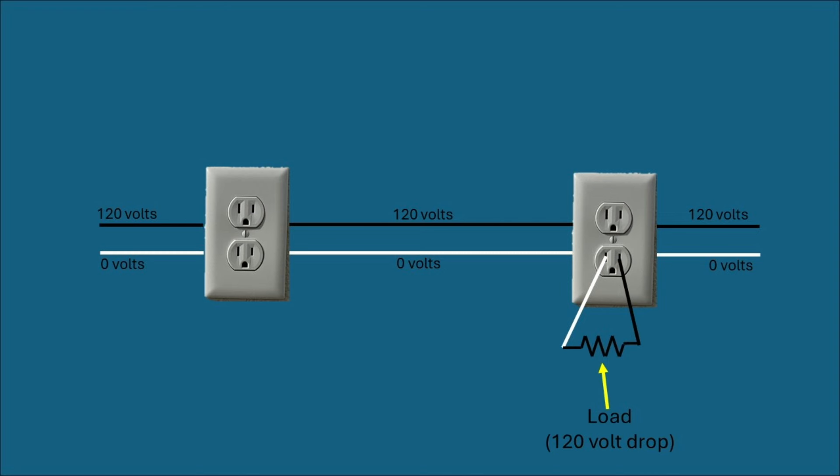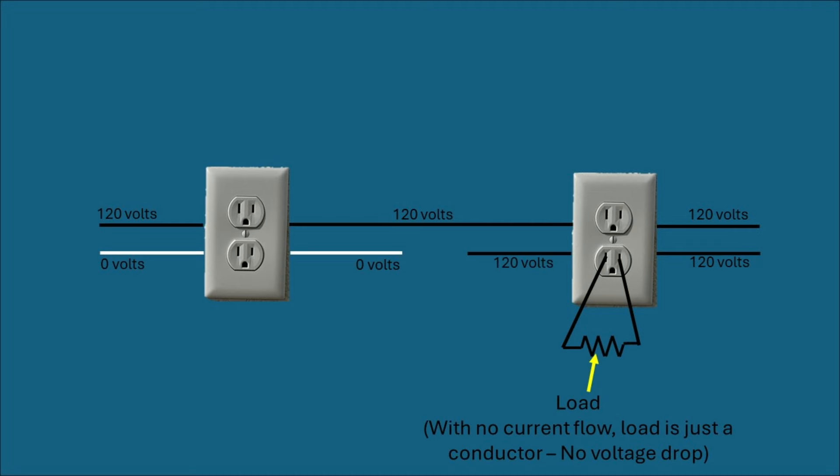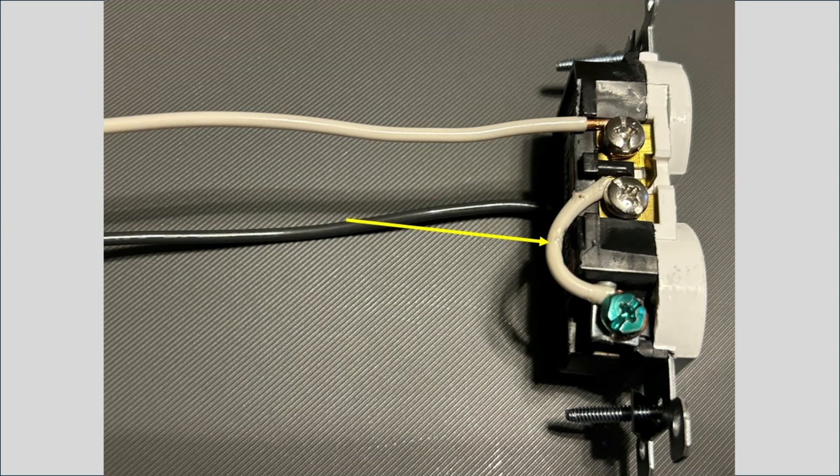So now let's look and see what happens when the neutral is opened. With an open neutral you still have that load plugged in but current can't flow. So that load is just like a conductor. There's no voltage drop. So you'll have 120 volts even on the neutral wire at that receptacle. And on a bootleg ground you've got the ground screw and the neutral screw connected together. That means you're also going to have 120 volts on that ground screw.